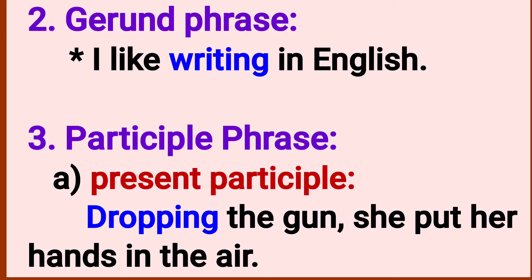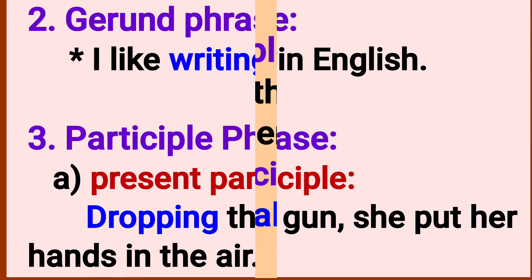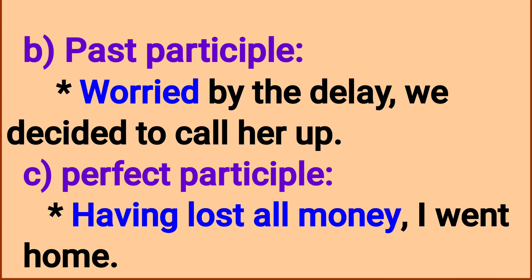Infinitive phrase example: 'I like writing in English.' Next, participle phrase. Present participle verb — for example: 'Dropping the gun, she put her hands in the air.' 'Dropping' is the present participle. Past participle: 'Worried by the delay, we decided to call her.'